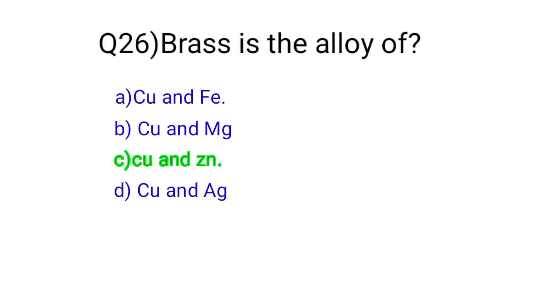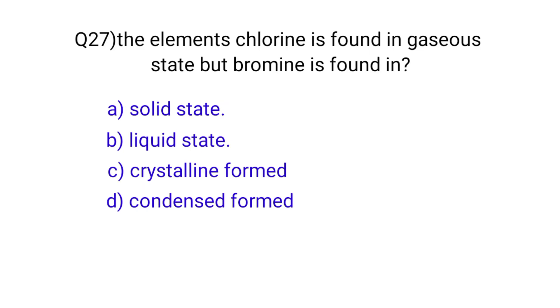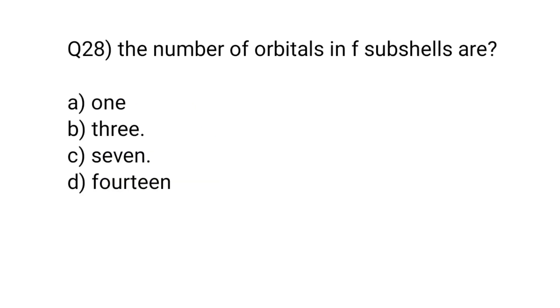Question number twenty-seven: the element chlorine is found in gaseous state, but bromine is found in? The correct option is B, liquid state. Question number twenty-eight: the number of orbitals in f subshell are? The correct option is C.